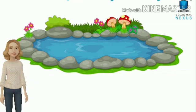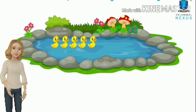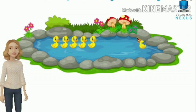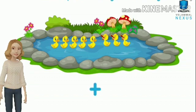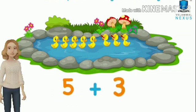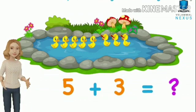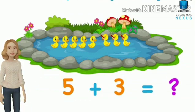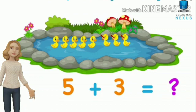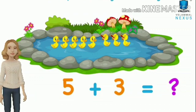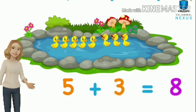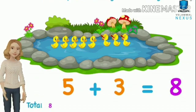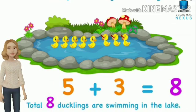There was a lake and five ducklings were swimming in the lake. Three more ducklings have joined them. Now can you all tell me how many ducklings were there together? So we need to add the numbers together. Five plus three is equal to eight, so totally eight ducklings are swimming in the lake.